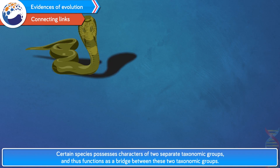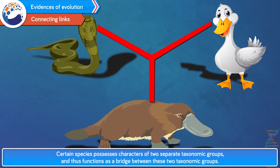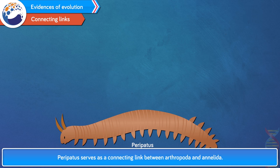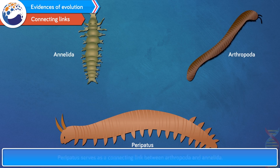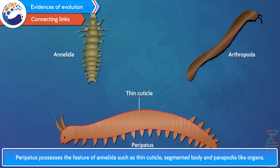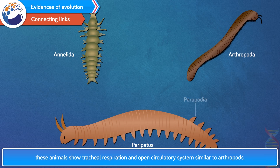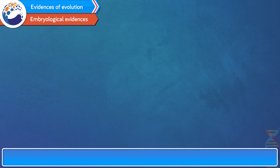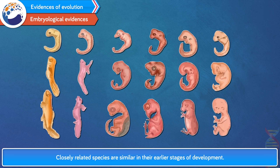Connecting links: Certain species possess characters of two separate taxonomic groups and thus function as a bridge between these two groups. For instance, Peripatus serves as a connecting link between Arthropoda and Annelida. Peripatus possesses features of Annelida such as thin cuticle, segmented body and parapodium-like organs, and also shows tracheal respiration and open circulatory system similar to Arthropods. Embryological evidences: It is stated that closely related species are similar in their earlier stages of development. If you compare the embryos of fish, salamander, tortoise, chicken, rabbit and man, all these embryos show extreme similarity, indicating a common origin.